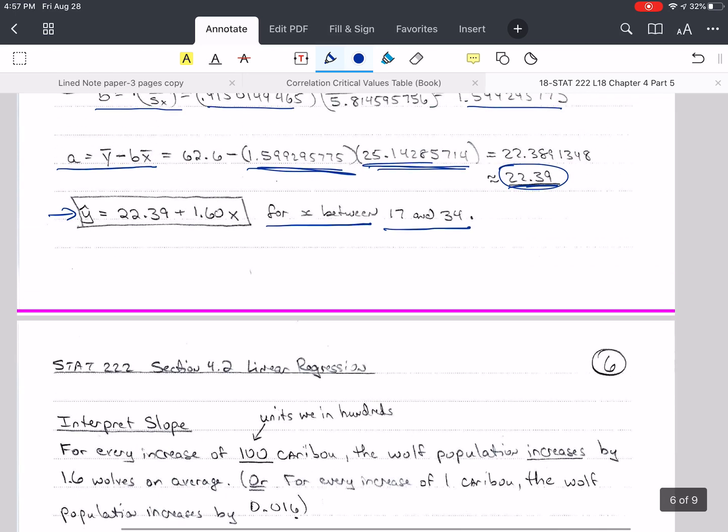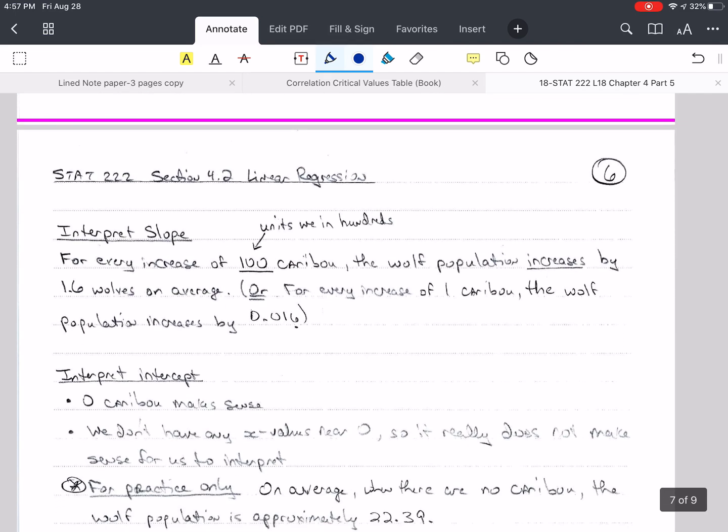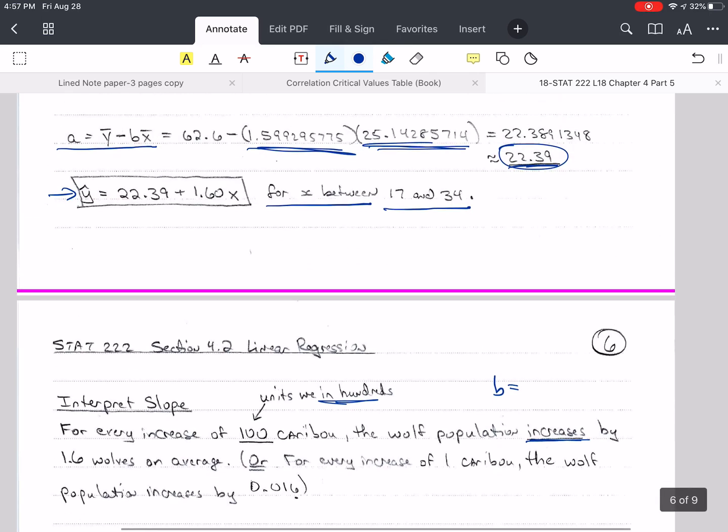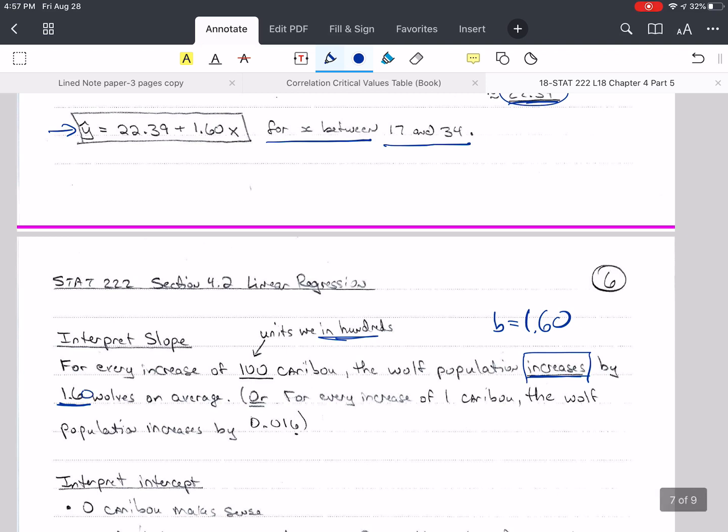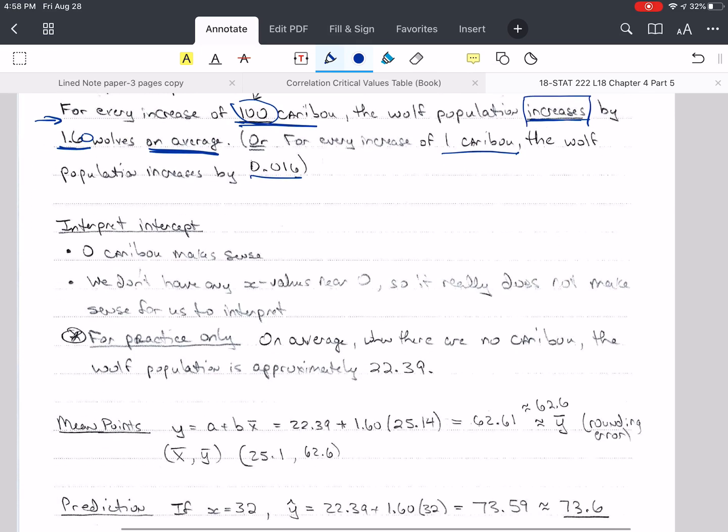Now I want to interpret the slope. Remember, look back at your formula or sentence. For every increase of one unit of caribou, but the units were in hundreds, so this is 100 caribou, the wolf population increases because b is positive 1.6. It's not negative, so this will be an increase by 1.6 wolves. But remember, it's on average. Or I could say for every increase of one caribou, the wolf population increases by 0.016. It just turns out the units were hundreds of caribou. This example is a little strange, and I apologize, but think about it and I think it'll make sense.